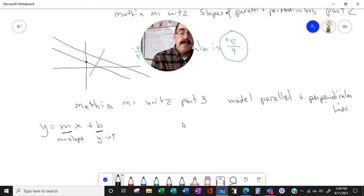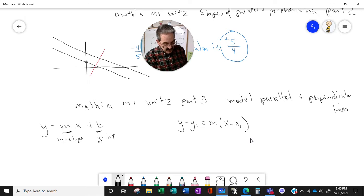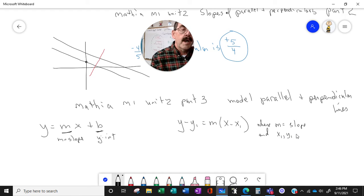But in Mathia, they really like us to be able to use this: Y minus Y1 equals M times X minus X1. We're not all in the same place, so this could be difficult for some, but let's give it a try. Where M is the slope and X1, Y1 equals a point on the line. Here's the example.